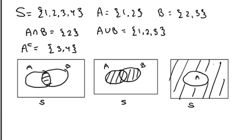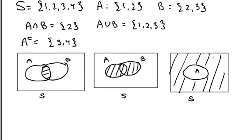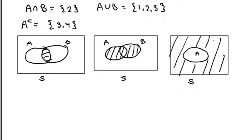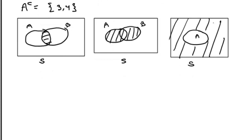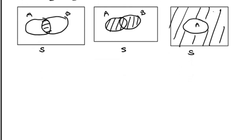So applying this idea to events, where S is the sample space, and A and B are arbitrary events, I can create new events by doing the union, intersection, and complement of existing events.